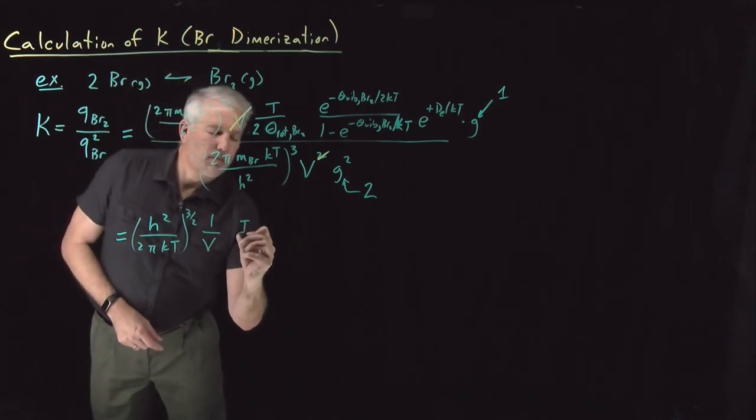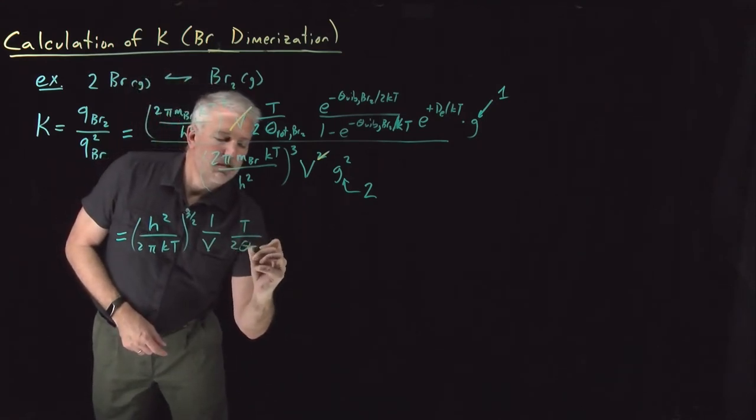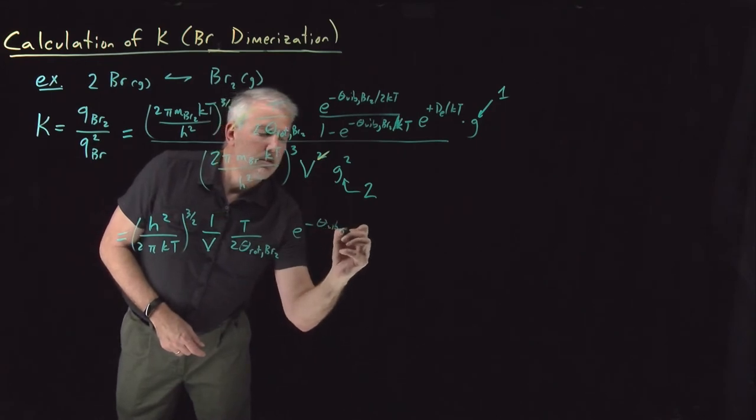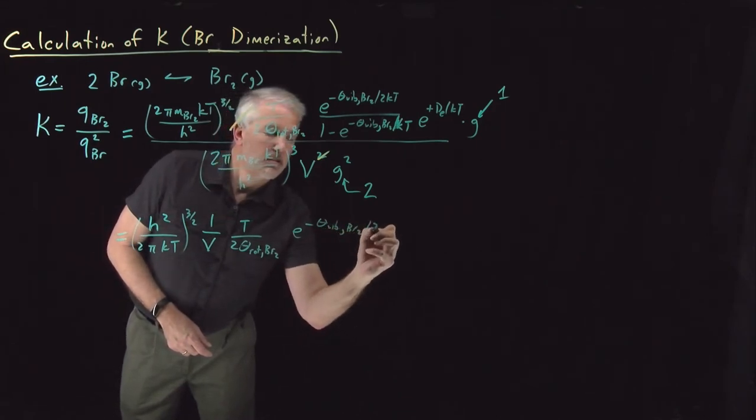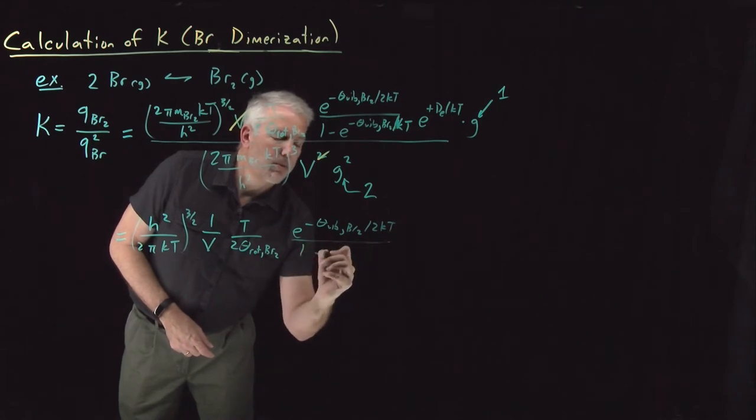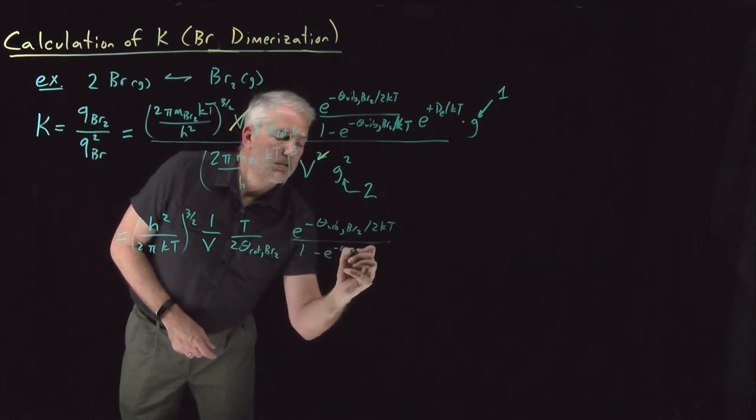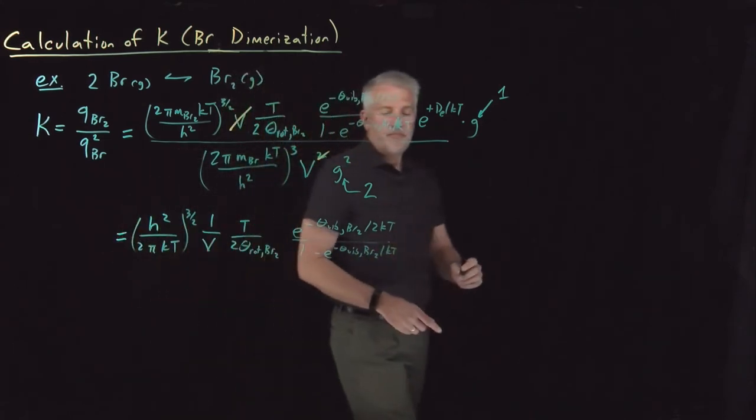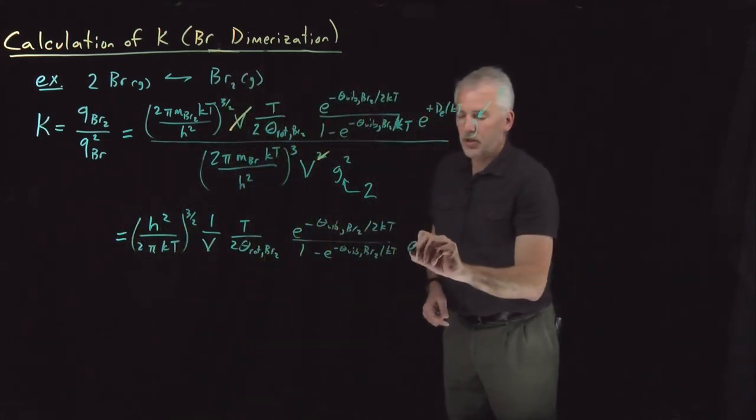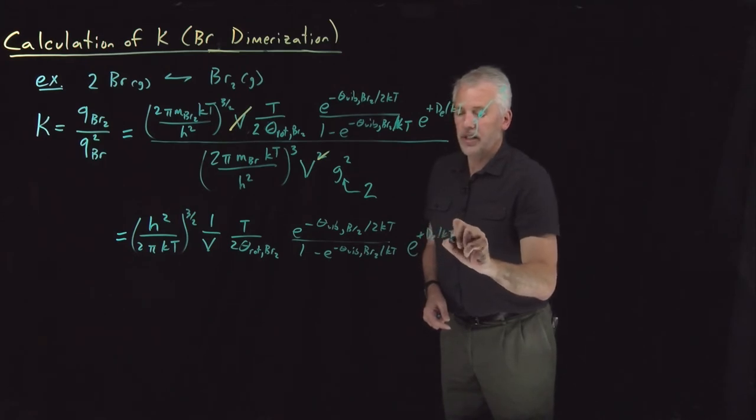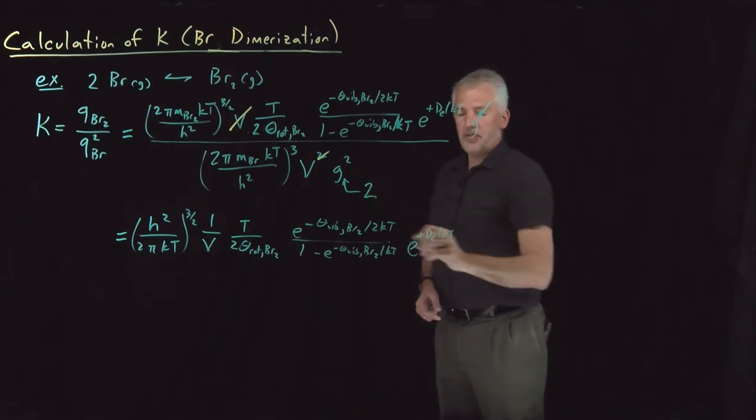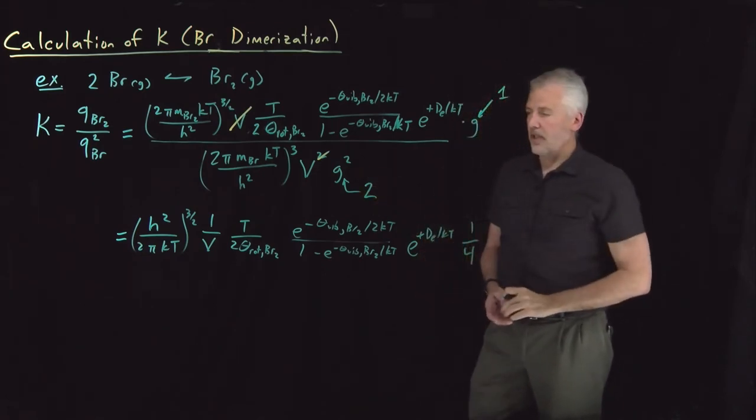I've got the rotational terms that are purely from the Br₂ molecule. Vibrational terms also purely from the diatomic molecule. Bond dissociation only matters for the diatomic molecule. And then this ratio of degenerate indices is a 1 in the numerator and a 4 in the denominator.